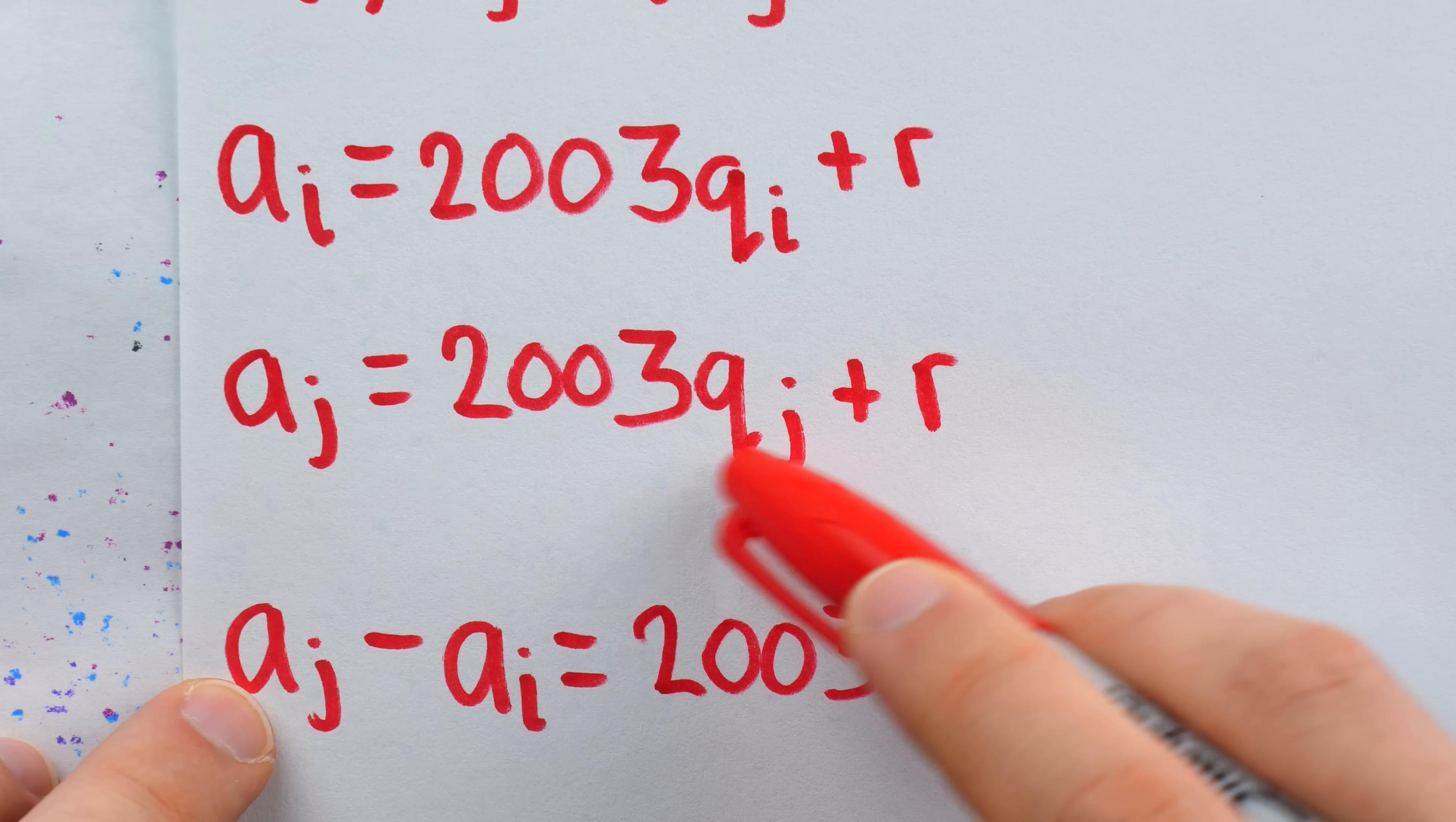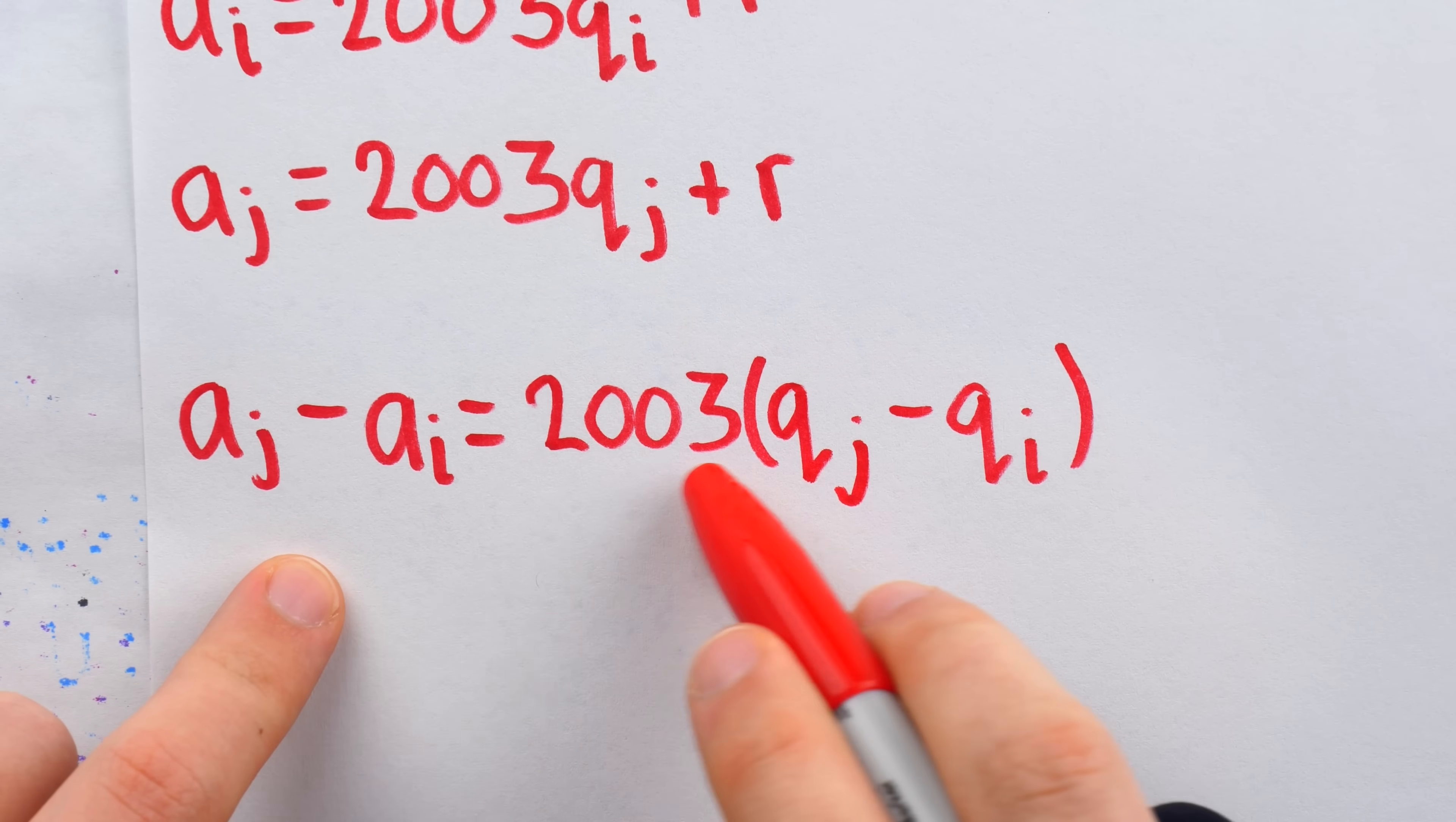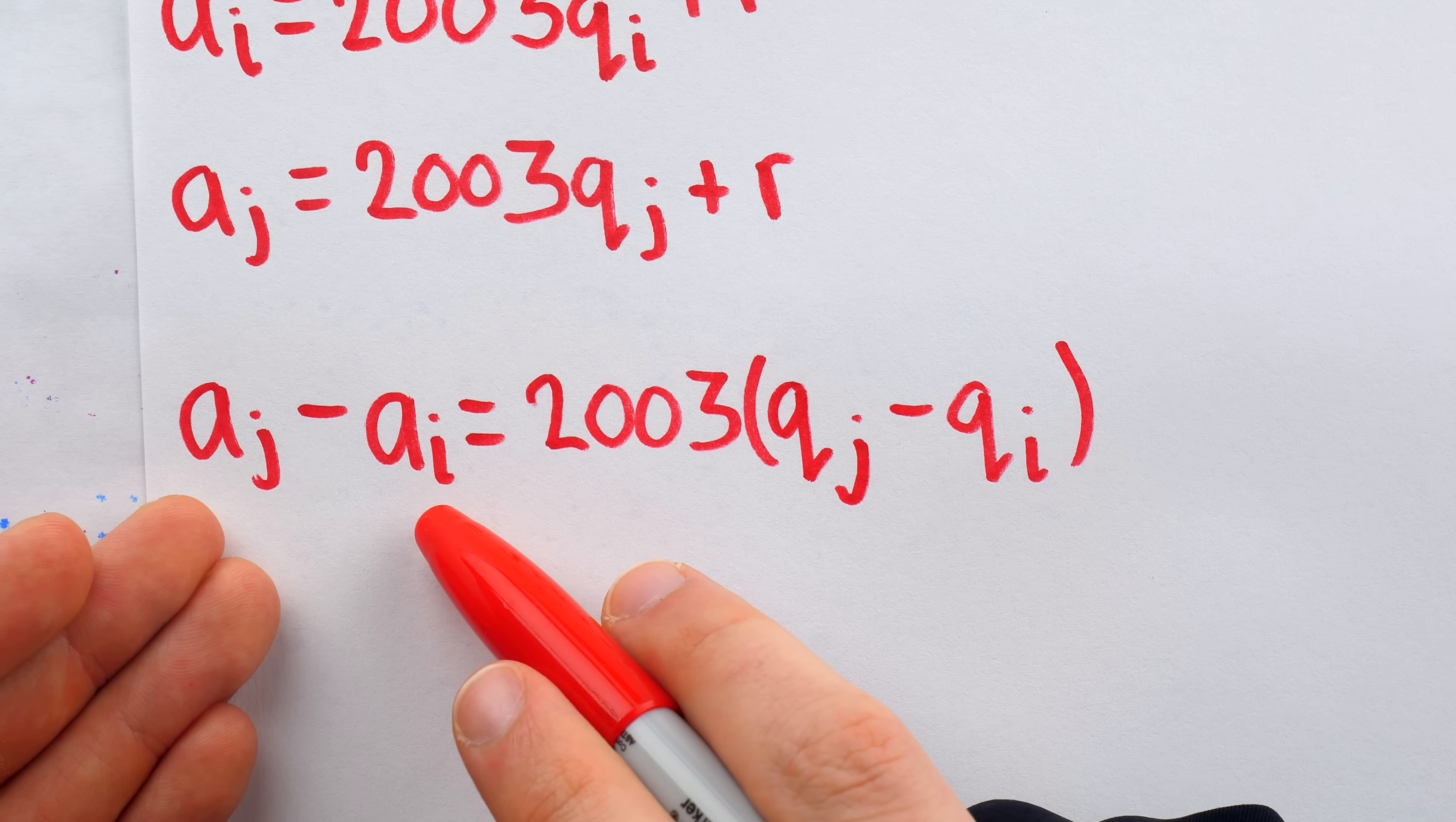How many exactly? Well, it would be Q_j 2003s, minus Q_i 2003s. So clearly, the difference of these two terms in our sequence is divisible by 2003. It's just 2003 times this. But this isn't a term of our sequence. It's a difference of terms.